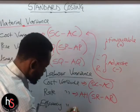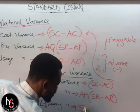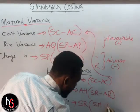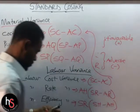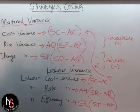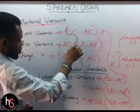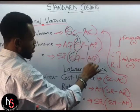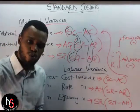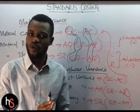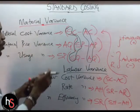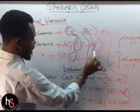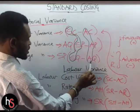For the labor efficiency variance, the formula is: Standard Rate × (Standard Hours − Actual Hours). Across all these formulas, you will notice we always have standard minus actual — the standard price and the actual price, the standard quantity and the actual quantity — which reflects that variance is always the difference between standard and actual.